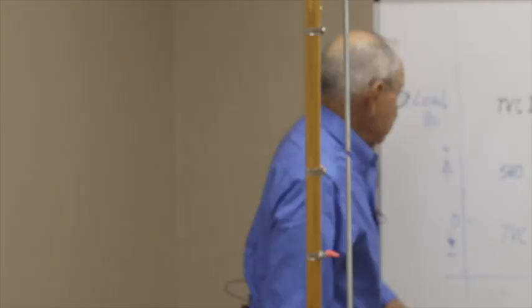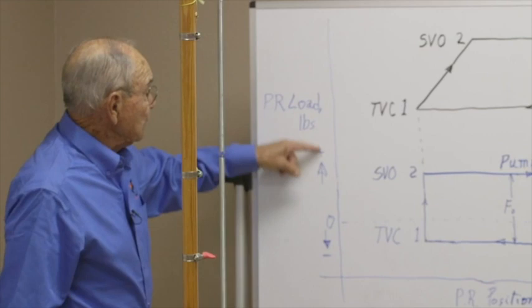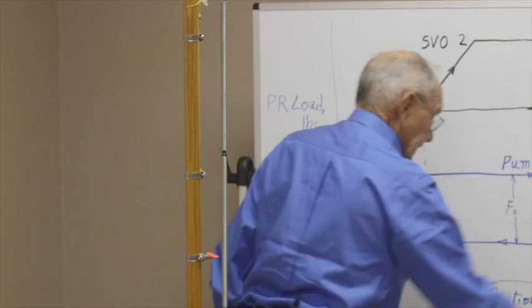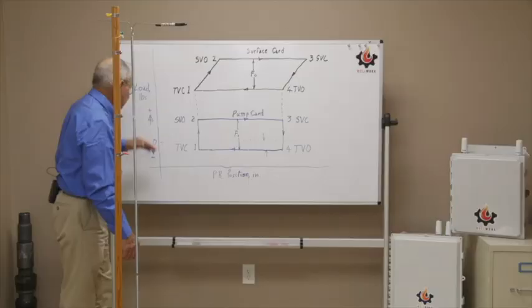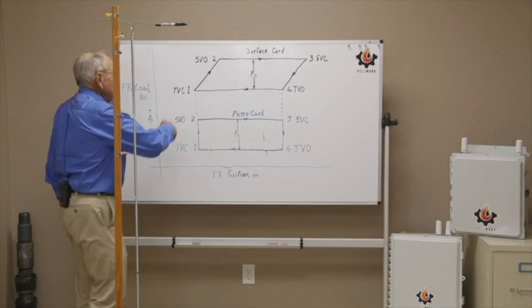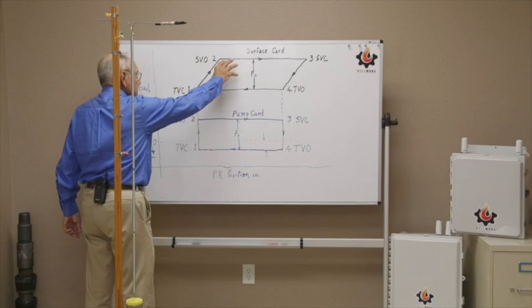When you're looking at these diagrams here, first of all, what is the coordinate system? Over here you have load. This is standard in the industry with dynamometer analysis. Load increases upwards, and you have a zero, and then this is negative load, that's positive load. Down here is polish rod position. We have instruments that measure load at the polish rod. As this pumping unit goes up and down, you're creating this card at the surface, and then we're calculating this card using the wave equation theory from that data from the surface card.